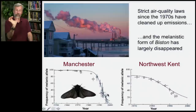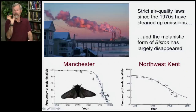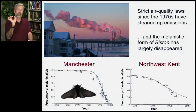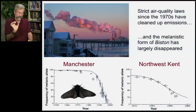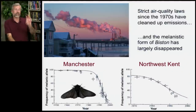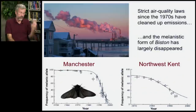That white form with the black speckles is, once again, the best camouflage against the background of the lichen. The black form was too conspicuous and would be eaten by pigeons, sparrows, and whatever else eats these little moths.